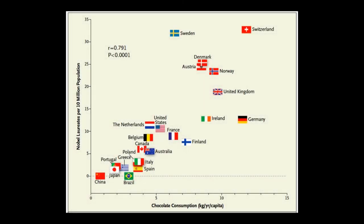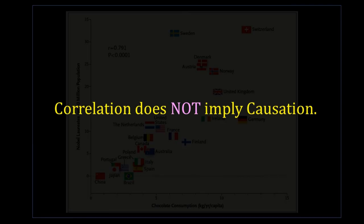Here is an interesting example. The horizontal axis of this graph shows per capita chocolate consumption per year across different countries, and the vertical axis shows the number of Nobel laureates per 10 million population in those countries. You can see a positive linear trend, and the Pearson correlation coefficient is very high. However, anyone with common sense knows that chocolate consumption cannot make someone a Nobel laureate — so even though there is high statistical correlation, there is no causal relation between these two variables.